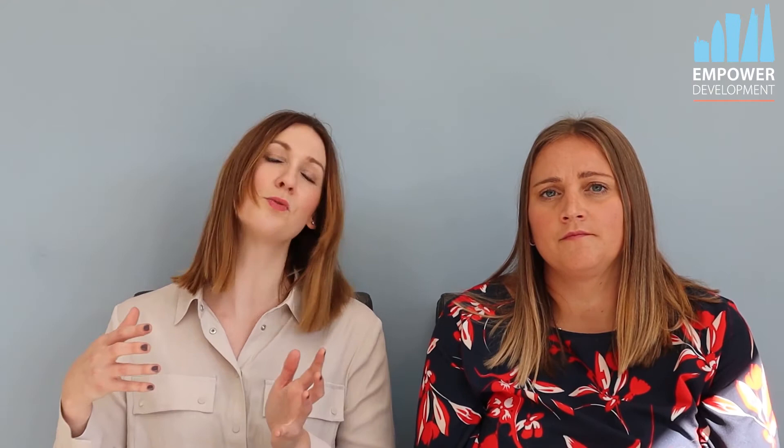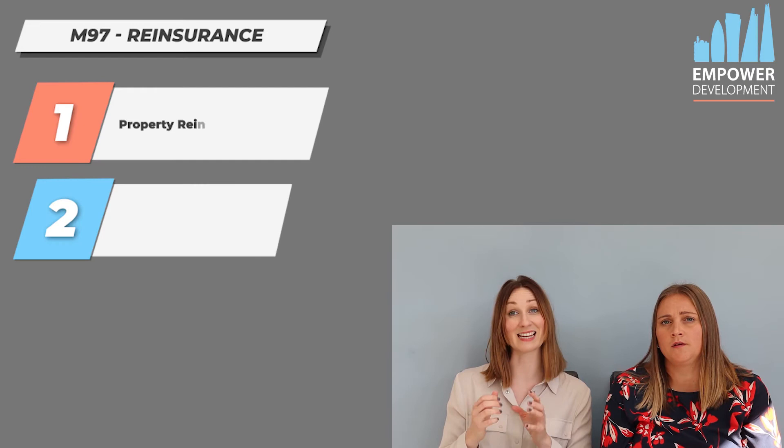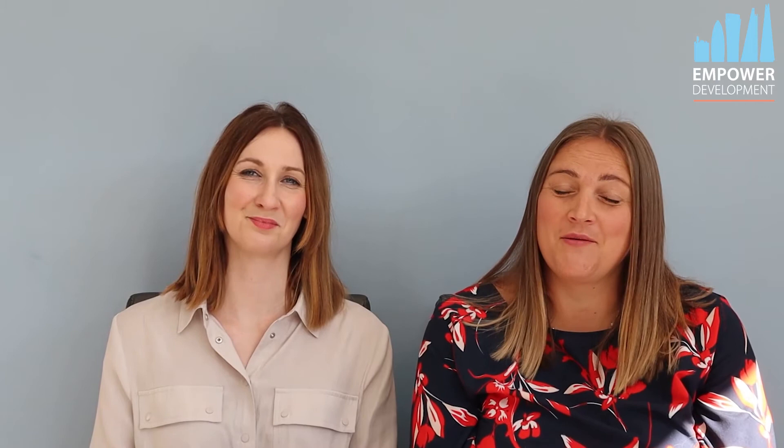Towards the end of the book, we look at the global reinsurance market as a whole and the reinsurance cycle. Then there are chapters dedicated to specific areas: one on property reinsurance, one on casualty reinsurance, and finally one on marine and aviation reinsurance.